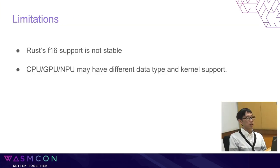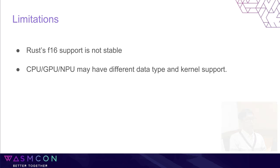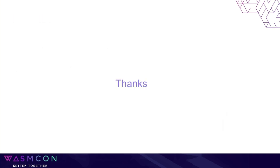There are still a lot of things that can be improved. Currently, Rust's FP16 support is still experimental, so the internal buffer type of FP16 tensor is FP32. This is not efficient, but can be resolved as soon as Rust's FP16 support is stable. Another limitation is limited data type and kernel support. Developers still need to understand their target devices first, so the model can be optimized for better performance and low power consumption. Feel free to contact us or open new issues if you have any questions. Thank you.